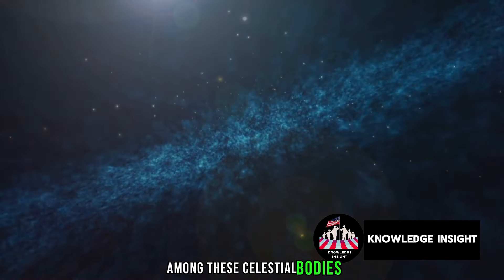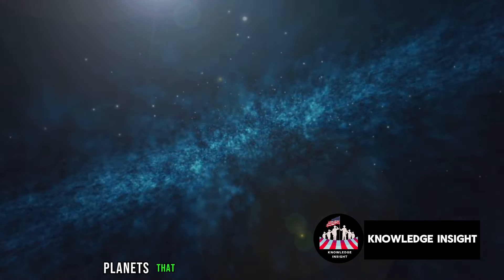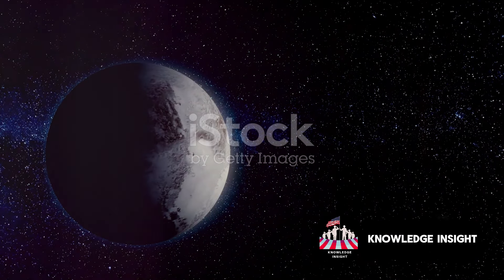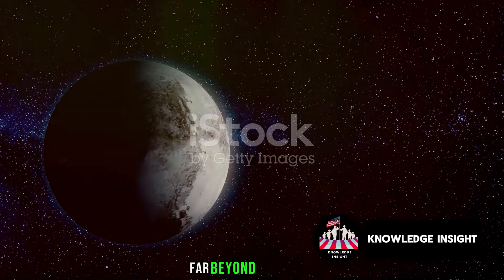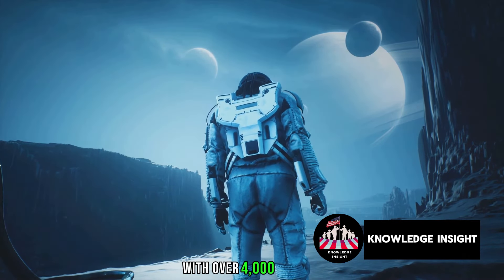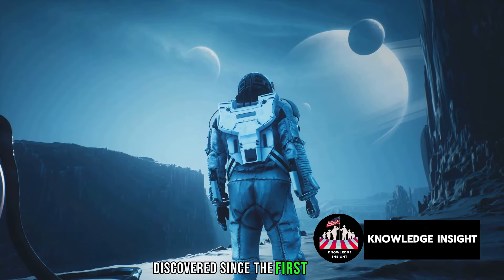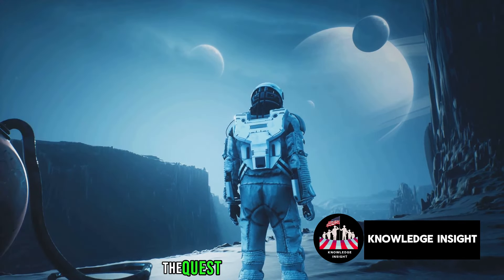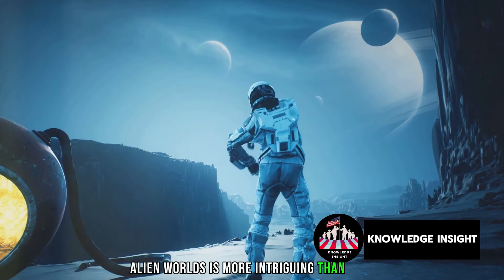Among these celestial bodies, we have exoplanets, planets that orbit stars outside our solar system. These distant worlds, far beyond our reach, have stirred up quite the controversy. With over 4,000 of them discovered since the first in 1992, the quest to understand these alien worlds is more intriguing than ever.